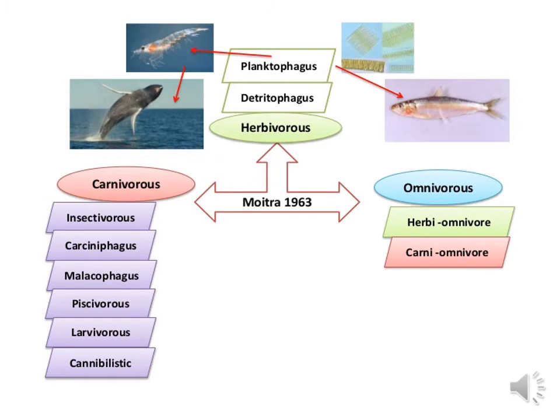The major feeding groups of fishes include omnivores, herbivores, and carnivores. Omnivorous fishes feed on both plant and animal materials. Examples of omnivorous fishes include freshwater angelfish and different types of barbs. Herbivorous fishes are further divided into two types: plantophagus and detritivophagus. Plantophagus includes those fishes which feed on planktons, such as silver carp Hypophthalmichthys molitrix, consuming phytoplankton as their main food.